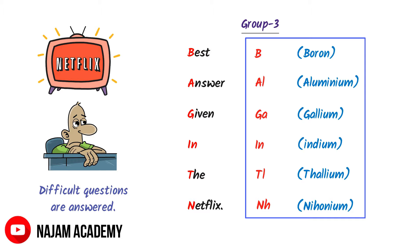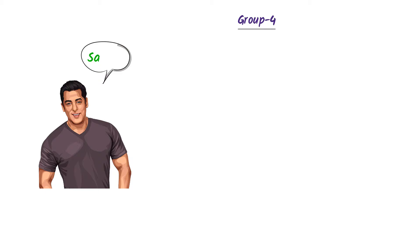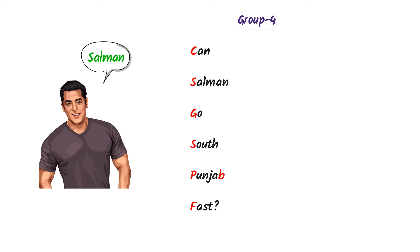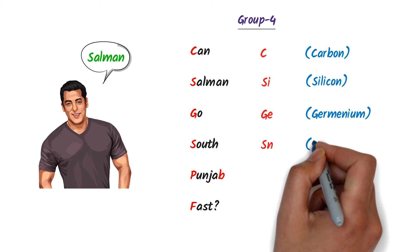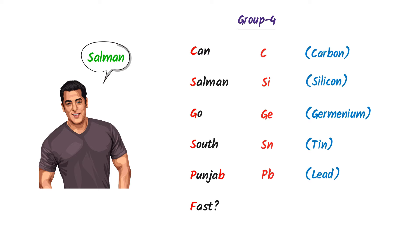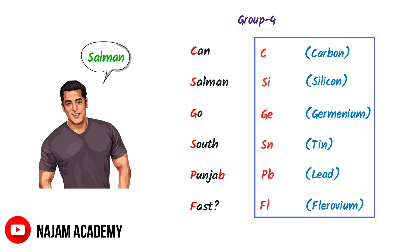Fourthly, consider Salman Khan. We know that he is a very strong man. I say: can Salman go south Punjab fast? Here, C stands for Carbon, S stands for Si — Silicon, G stands for Ge — Germanium, S stands for Sn — which is the symbol of Tin, P stands for Pb — which is the symbol of Lead, F stands for Fl — Flerovium. Thus this is the fourth group of the periodic table.